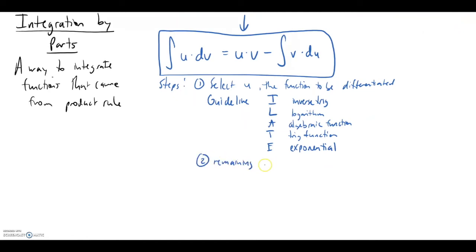Step two in the process is to denote the remaining function from our original integral as dv. This is the function that we'll have to integrate to get the v function that we see in both terms of the formula. Which leaves us with step three. We're going to take all the parts and we're going to plug those into the formula. But note, in the formula, there's still an integral at the end.